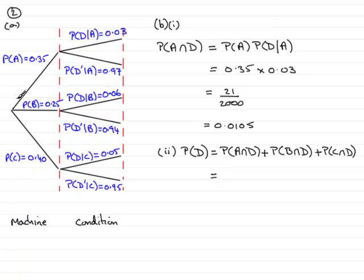And if we work this out, it is just simply a case of just going along the branches and multiplying the probabilities together. We've got the first answer, 0.35 times 0.03, which is 0.0105. And for the probability of B and being defective, that's going to be 0.25 times 0.06. And finally, probability of C and being defective, that would be 0.40 multiplied by 0.05.